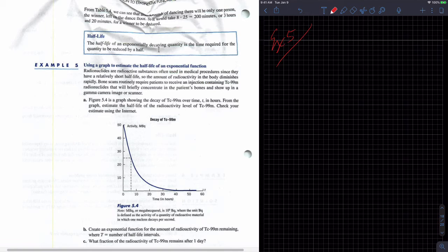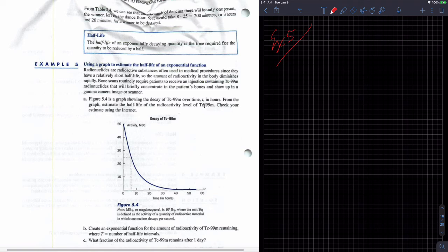So figure below is a graph showing the decay of TC99M over time, T in hours. So each T in this case is an hour. From the graph, estimate the half-life of the radioactivity level of TC99M. Check your estimate using the internet. So it wants us to look this up, half-life of this.